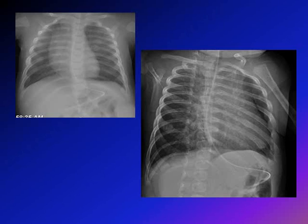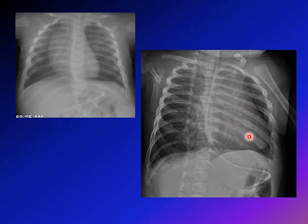On the other oblique view of the same patient, you can obviously see an older healed fracture of another rib. Oblique views will show rib fractures much better when rib fractures are suspected.